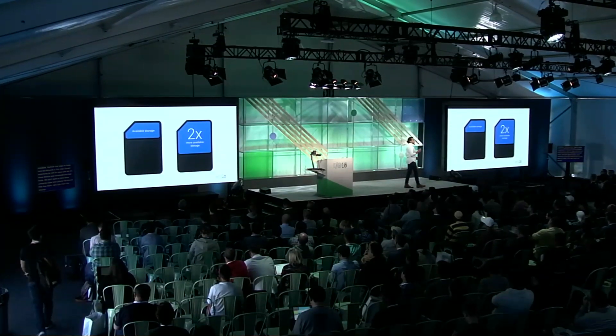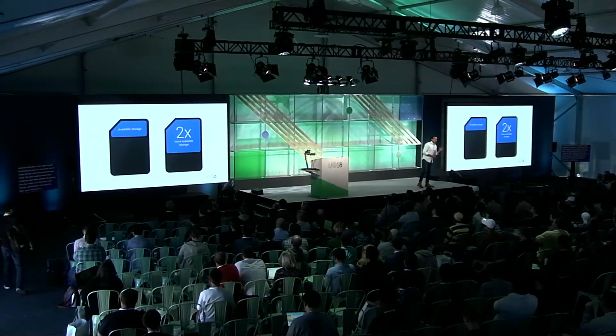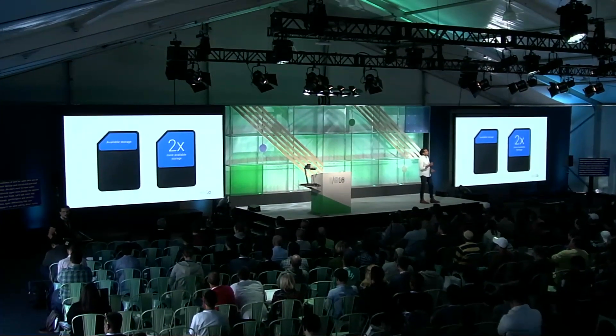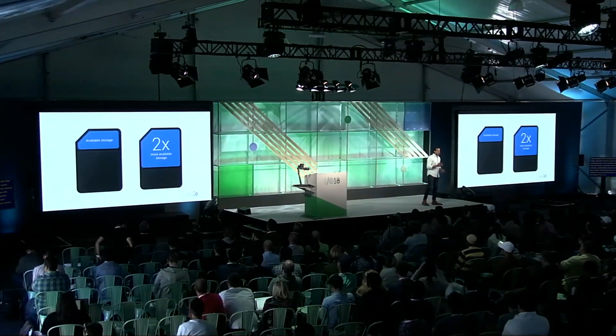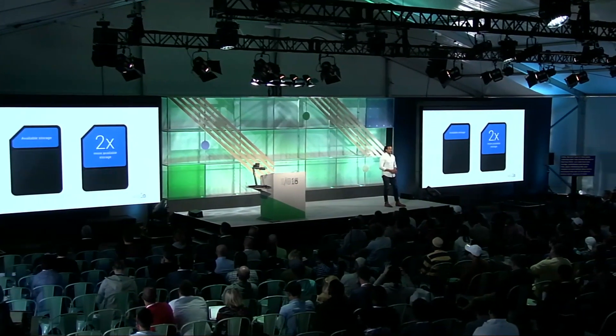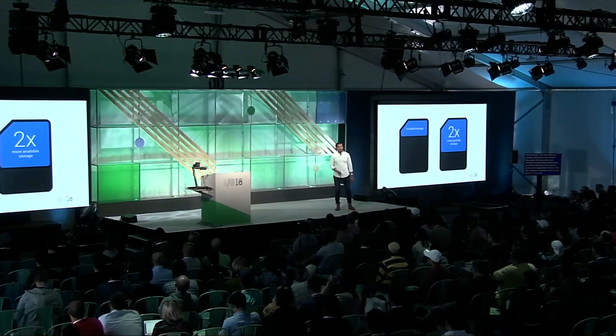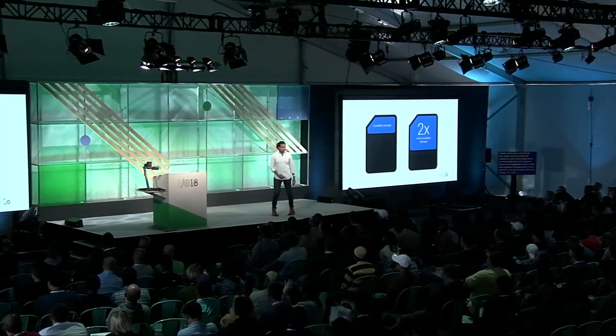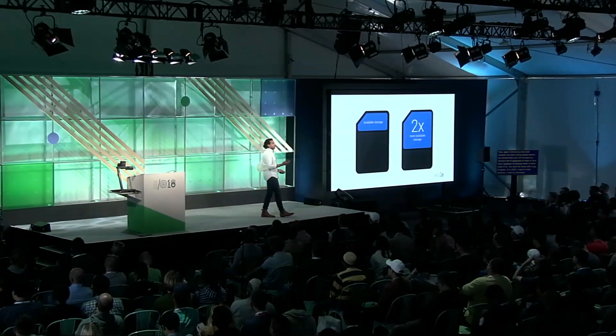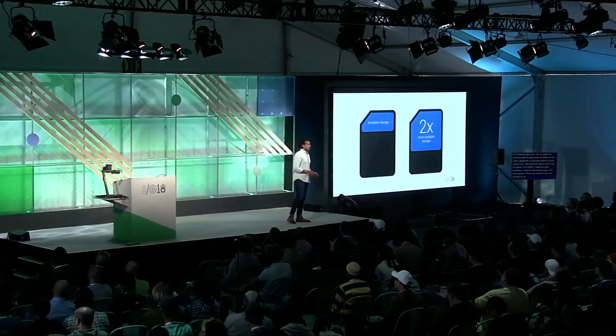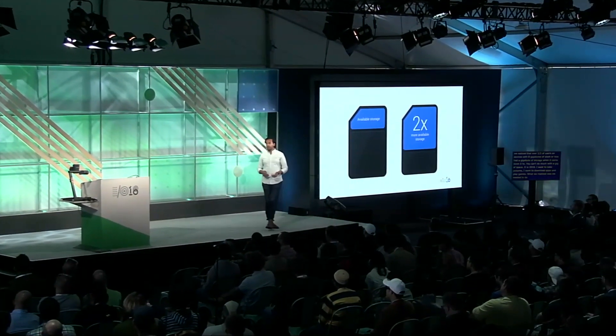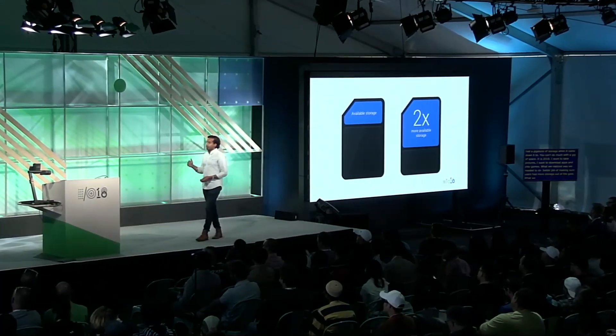We also made sure to introduce preload limits — we definitely don't want to have users unboxing super slow phones the second they buy them. Diving into storage, performance, and security: we noticed that over two-thirds of users on devices with eight gigabytes of flash or less really only had about a gigabyte of usable storage. With software improvements, users now have 2x more storage right off the bat — that's an additional 1,000 photos they can take on their phone.